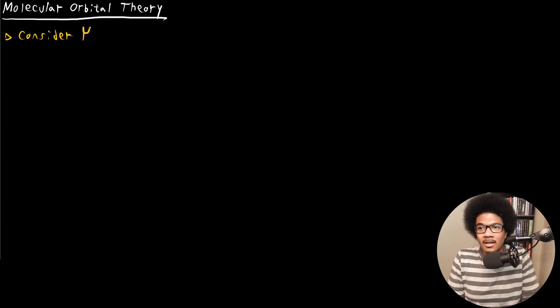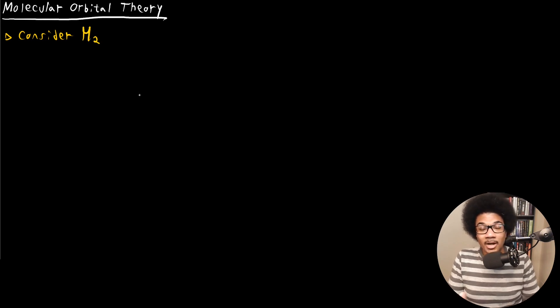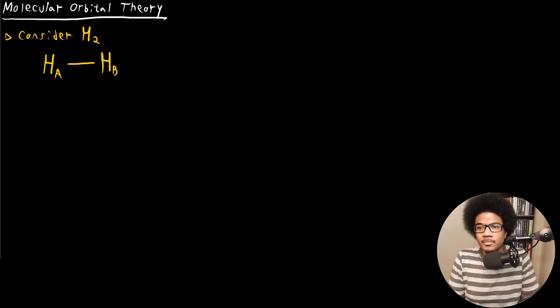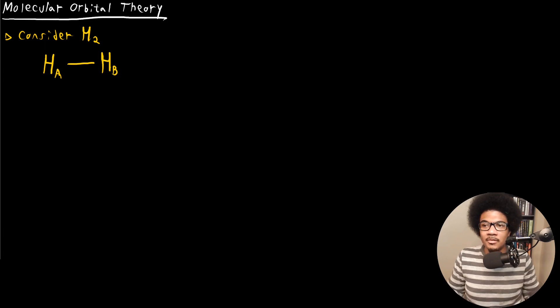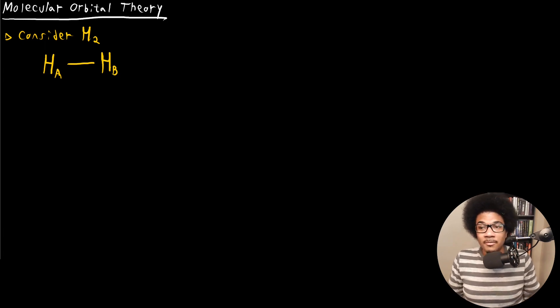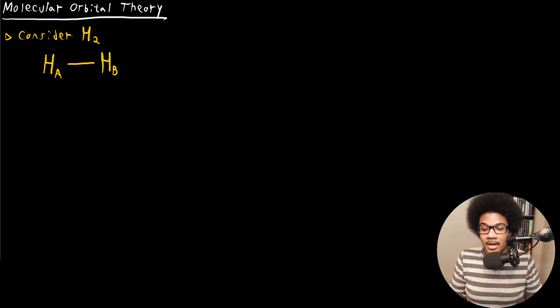H2 involves one bond between two hydrogens — the simplest molecule you can think of. For this purpose, I'm going to label each one differently. This one I'll call hydrogen A, and it will be bonded to hydrogen B. This is your Lewis structure for H2: two hydrogens, one bond.